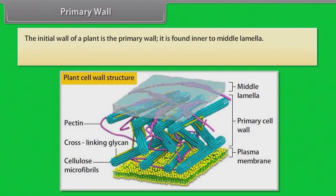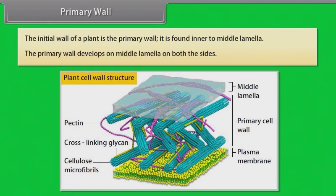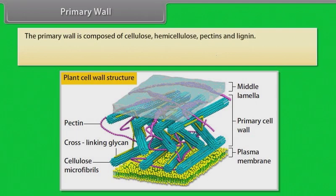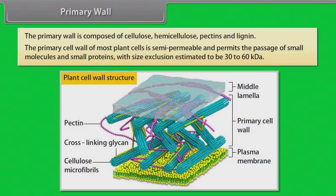Primary wall: The initial wall of a plant is the primary wall, found inner to the middle lamella. It develops on both sides of the middle lamella and is composed of cellulose, hemicellulose, pectins and lignin. The primary cell wall of most plant cells is semi-permeable and permits the passage of small molecules and small proteins, with a size exclusion estimated to be 30 to 60 kDa.